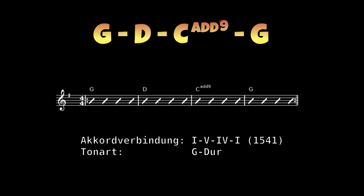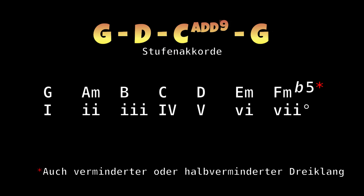Die Akkordfolge ist eine einfache Akkordverbindung in der Tonart G-Dur. Die Stufenakkorde der Tonart G-Dur sind G-Dur, A-Moll, B-Dur, C-Dur, D-Dur, E-Moll und ein Fis-Moll B5.